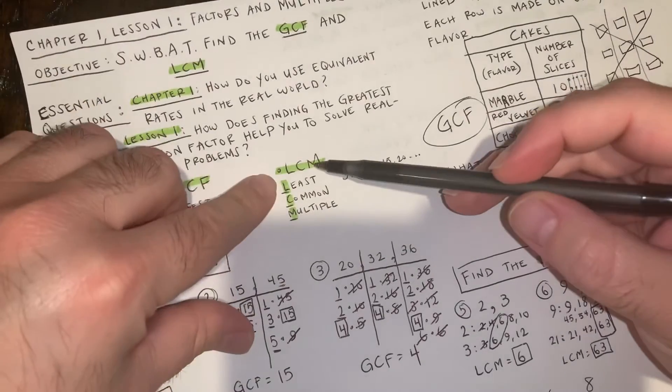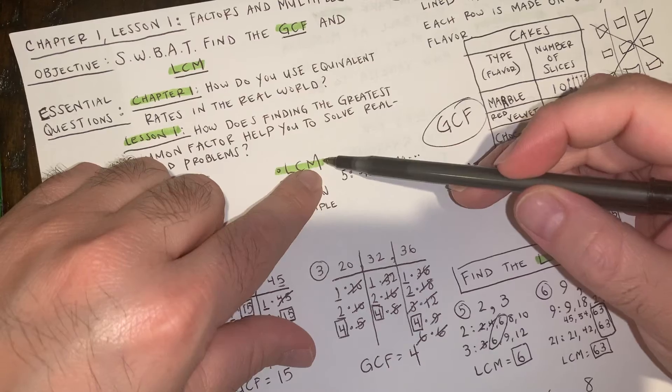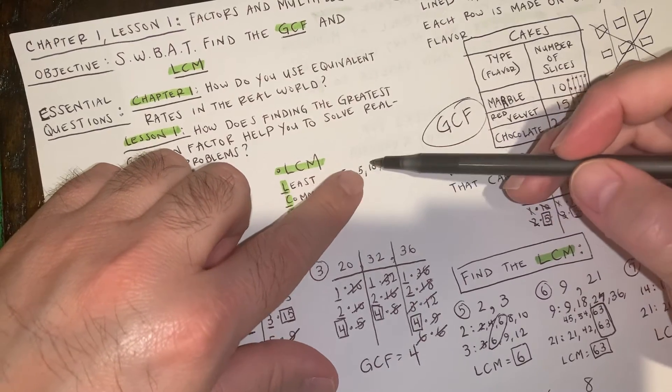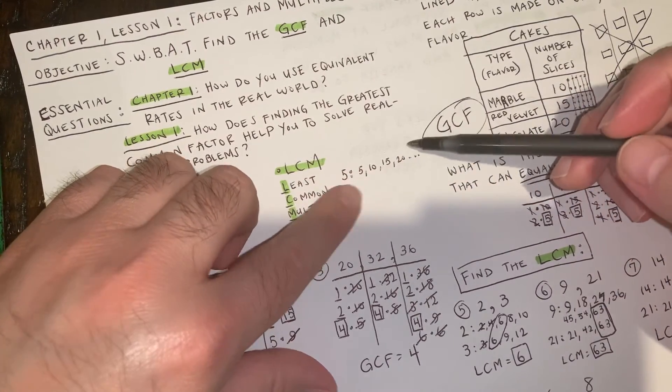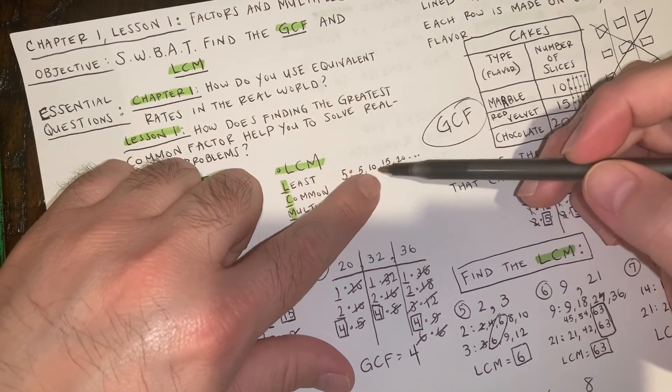When you're doing LCM, you're basically counting by the number. So five, ten, fifteen, twenty. Or you can say you're multiplying by the number. Five times one, five times two, five times three.